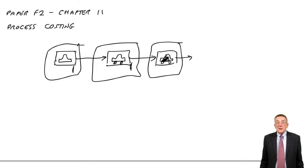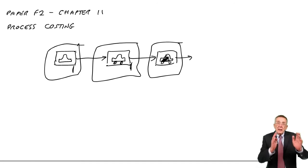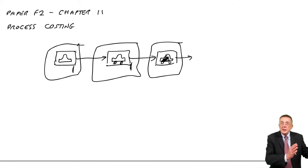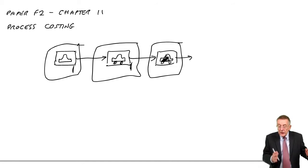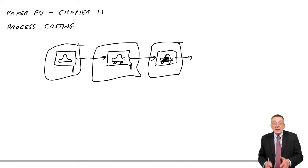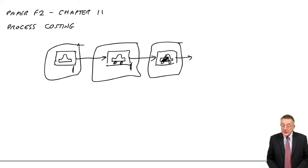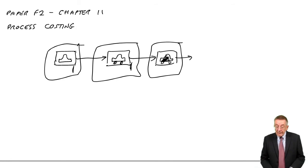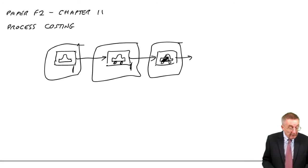With process costing, we can cost at each stage. So it's where you have a large volume of identical items like cars, and where you have several processes.